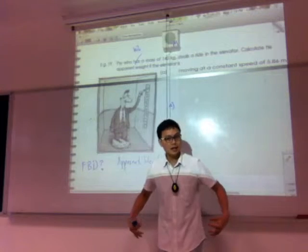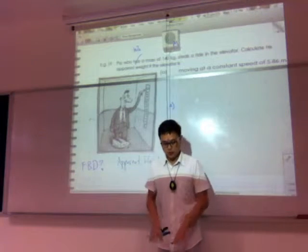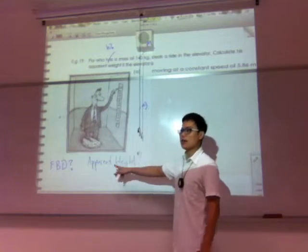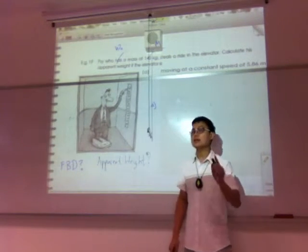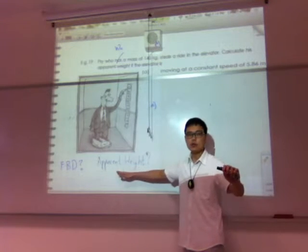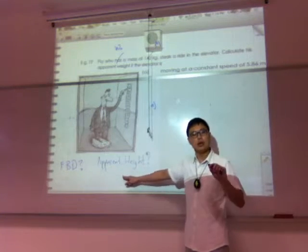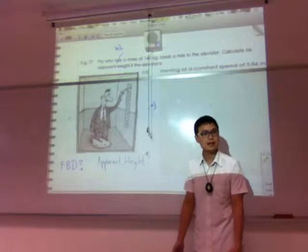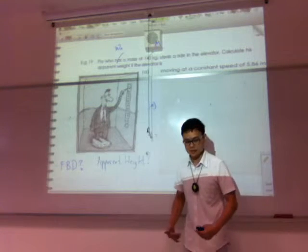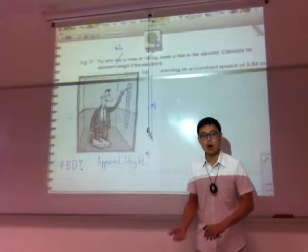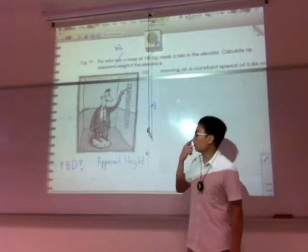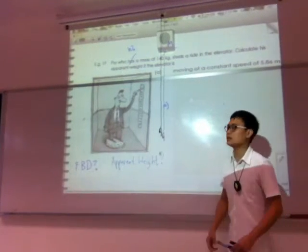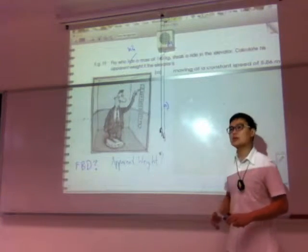Now, what if I were to jump? Momentarily, when I first push off, wouldn't the scale actually be depressed more? You must understand what apparent weight actually means. The apparent weight is equal to the normal force of the floor on the person.